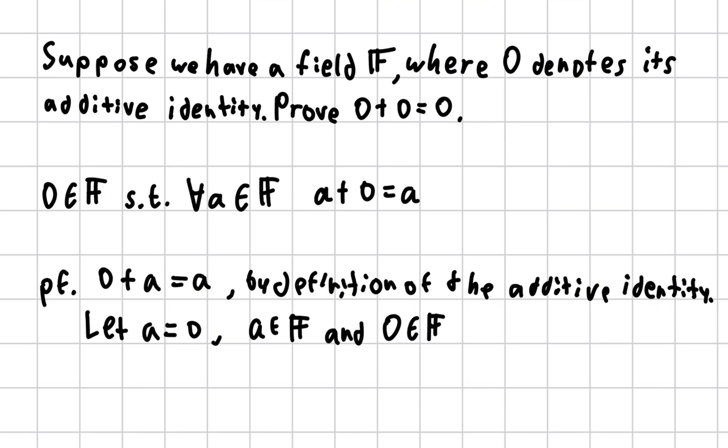So a is an element of our field, and 0 is also an element of our field. So we can just say a is one of these elements. In particular, it's going to be this element, the additive identity.